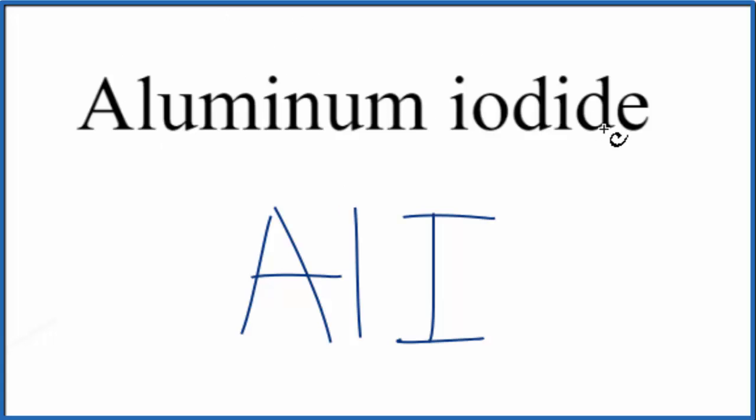Because aluminum is a metal and iodine is a non-metal, we need to take into account the charges when we write the formula. This is a neutral compound. There's no ion written after it, so all of the charges have to balance.